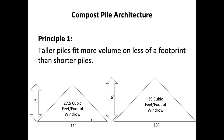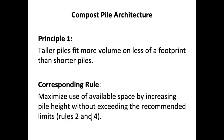Principle one: taller piles fit more volume on less of a footprint. A five-foot-tall windrow 11 feet wide has about 27.5 cubic feet of material per foot of windrow — just about a cubic yard per foot. Add just one foot in height with two feet of additional base width and you have 39 cubic feet — that's 18% more footprint but 42% more volume. The corresponding rule: maximize use of available space by increasing pile height without exceeding the recommended limit.